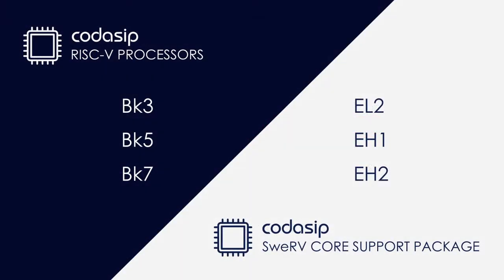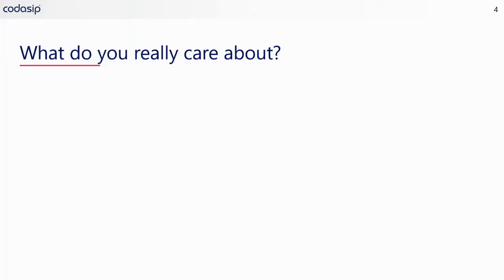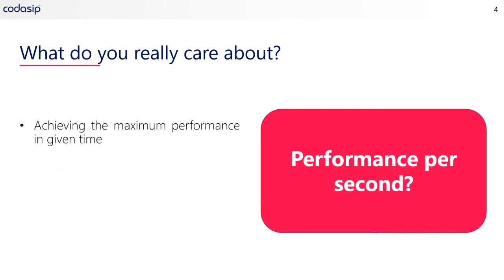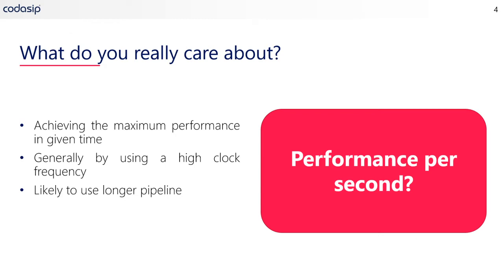Roddy, in the introductory video, you mentioned that performance means different things to different applications. What should an SOC designer consider with respect to performance? Well, Steve, you always have to ask yourself what you really care about. Is it performance per second? In other words, absolute performance in a particular time. Generally, this would be achieved by using a high clock frequency, with the consequence that you are likely to use a longer pipeline and end up with higher latency.